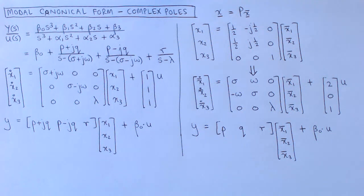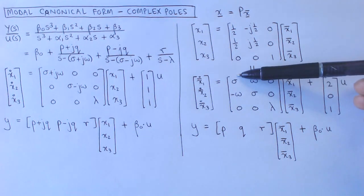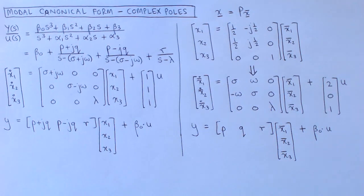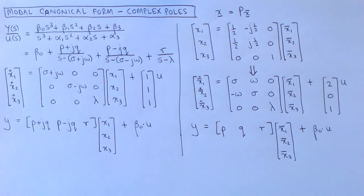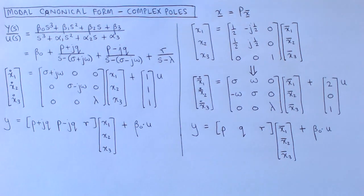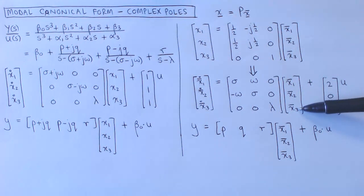Since all the state matrices are now real, the state variable model is realizable. Although the A matrix is not a diagonal matrix anymore, it has a block diagonal form, which means that there are a number of non-zero blocks arranged on the diagonal, with the rest of the matrix being zero. This means that the states corresponding to a block are coupled, but that they are decoupled from the other states.